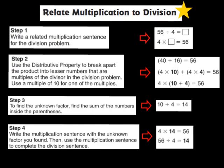Step number 2 says: use the distributive property to break apart the product into lesser numbers that are multiples of the divisor in the division problem. My product is 56, so I'm breaking it apart into 40 and 16. When I add those two numbers together, they give me 56. And both 40 and 16 are multiples of the divisor 4 — because 4 times 10 gives me 40, and 4 times 4 gives me 16. A good hint is to use a multiple of 10 for one of the multiples.